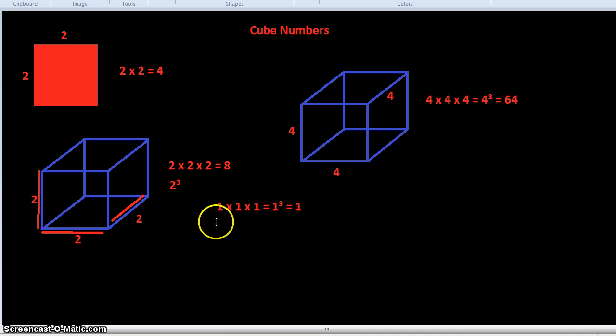Then we have, as we saw before, let's change color to green. 2 times 2 times 2, which equals 2 cubed. Which equals 8.